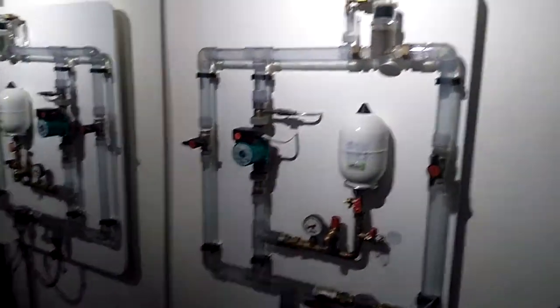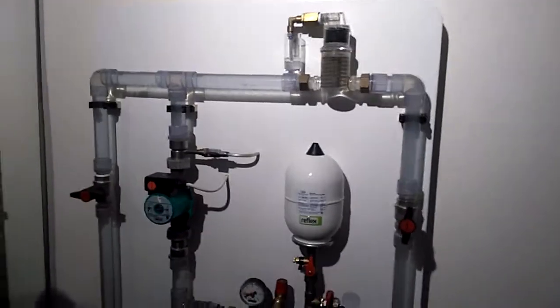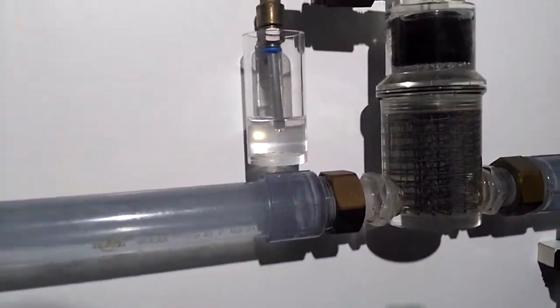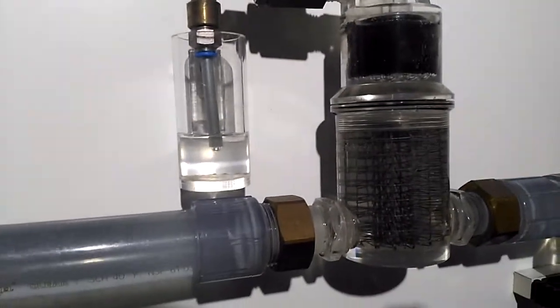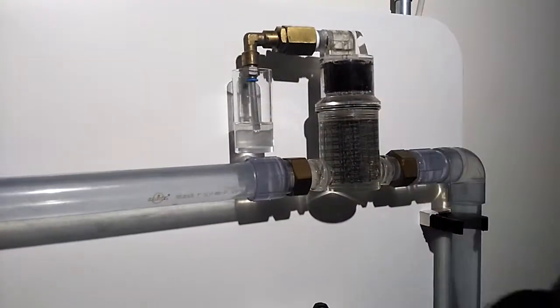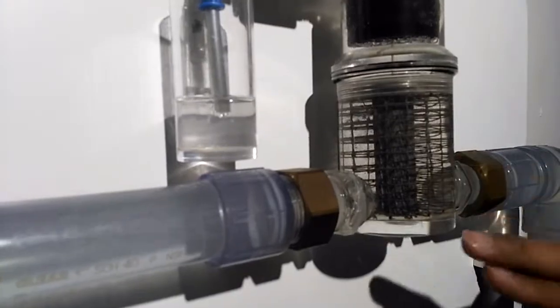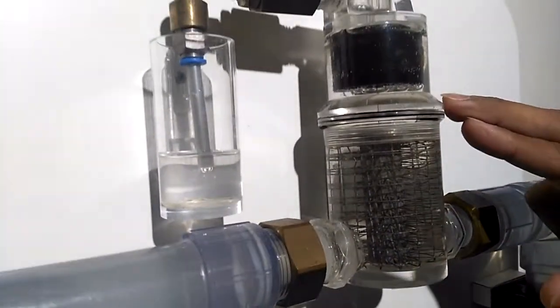This way you're showing the difference between mechanical separators and vacuum degassing. Now this is an air separator. Water is passing with gas bubbles, and when it's hitting this wire mesh which you can see, all the bubbles go to the top.